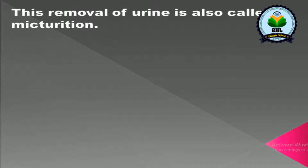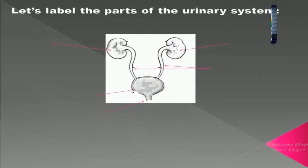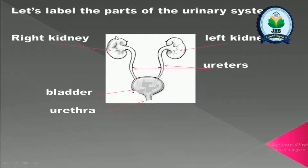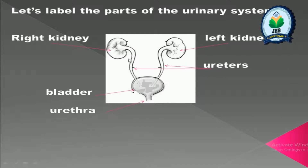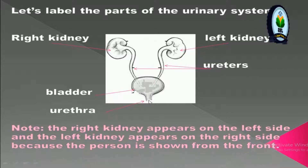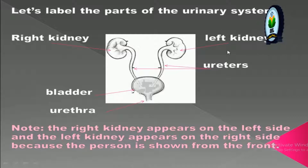This removal of urine is also called micturition. Let's label the parts of the urinary system: this is the right kidney and this is the left kidney, these are the two ureters, the urinary bladder, and the urethra. Note that the right kidney appears on the left side and the left kidney appears on the right side because the person is shown from the front.